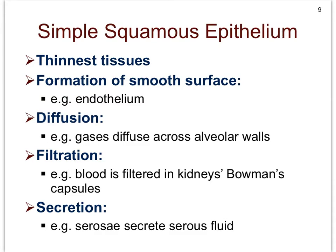Simple squamous epithelial tissue is a very abundant tissue. Even though it's very thin, it is very delicate. Because it's so abundant and widespread, we see that it has many functions. For instance, it forms a smooth surface on the inside of blood vessels — all blood vessels have an inner layer of simple squamous epithelium, which we refer to as endothelium. In the serous membranes of the ventral body cavity, we also find simple squamous epithelial tissue, which we refer to as mesothelium.